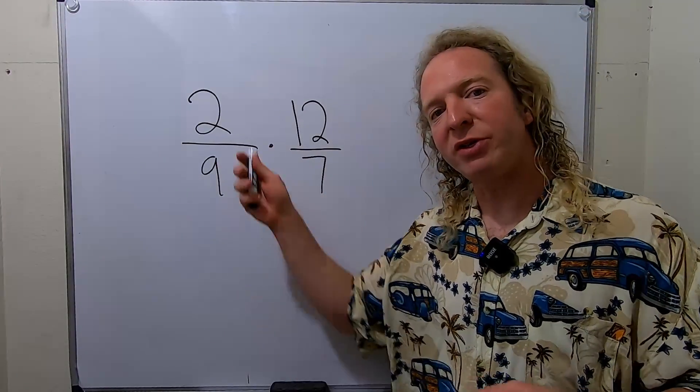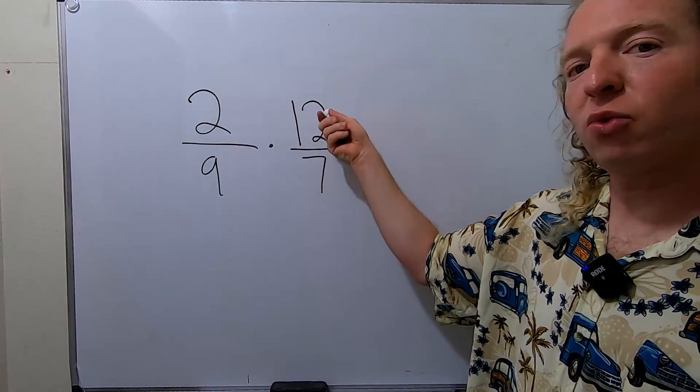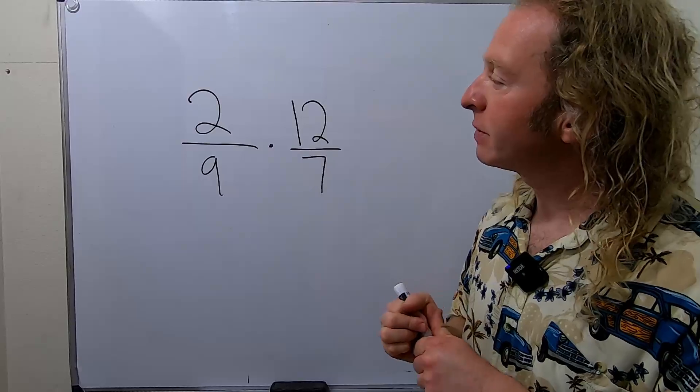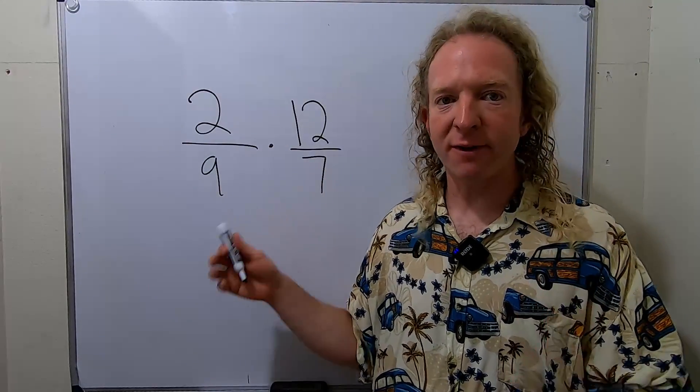Hi, everyone. In this video, we're going to multiply 2 ninths times 12 over 7. So when you're doing something like this, what you can do is you can cancel common factors.